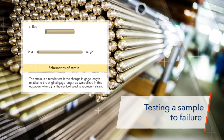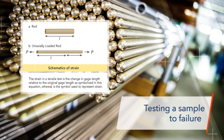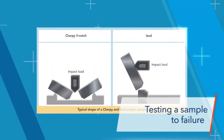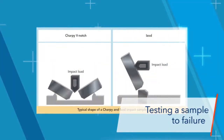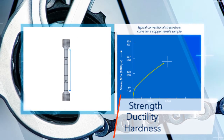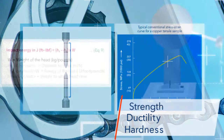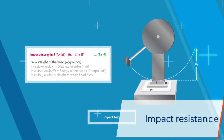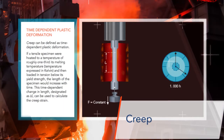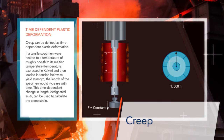By testing a sample to failure by applying a constant or increasing load, we learn about its mechanical properties: strength, ductility, related hardness properties, toughness or impact resistance, and time-dependent plastic deformation, or creep.